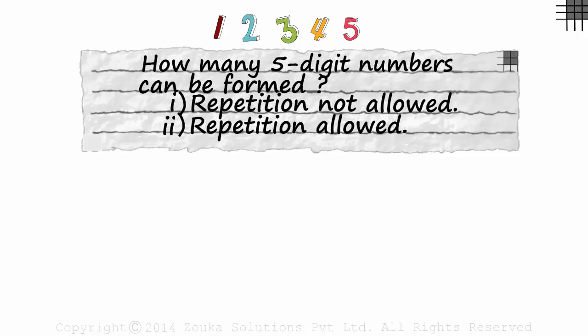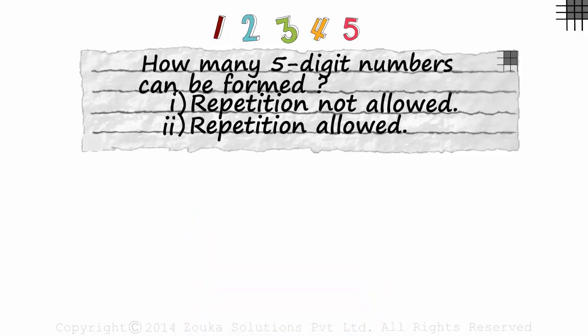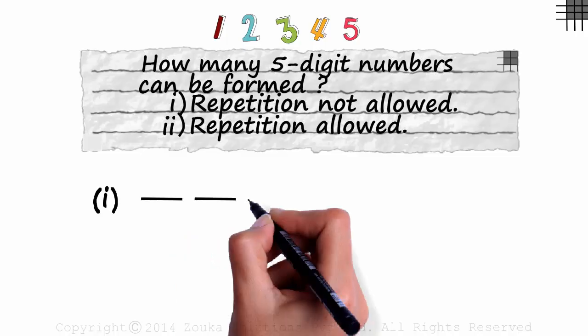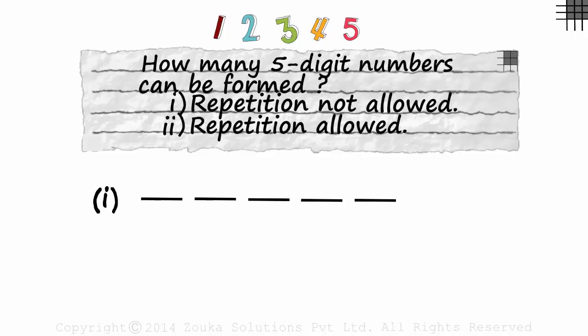If you haven't already, I strongly recommend that you go through our previous sessions based on forming numbers. It will help you understand this session much better. Let's understand what's been asked. In the first case, we have been asked to find the number of ways in which five digit numbers can be formed when repetition is not allowed. First things first, let's make five slots for the five digits. Is there any condition given? No, there isn't. As there is no condition, we can start from any end.